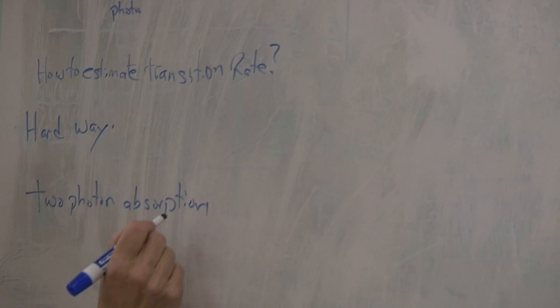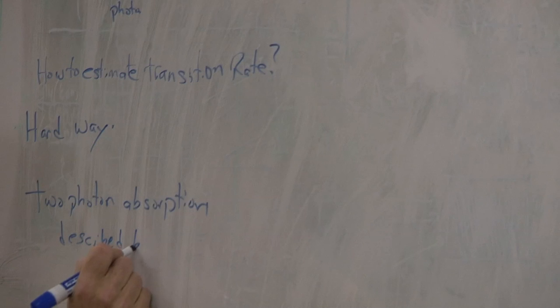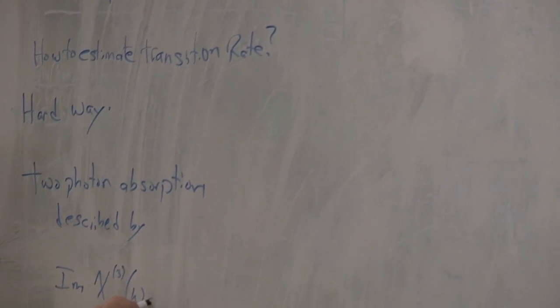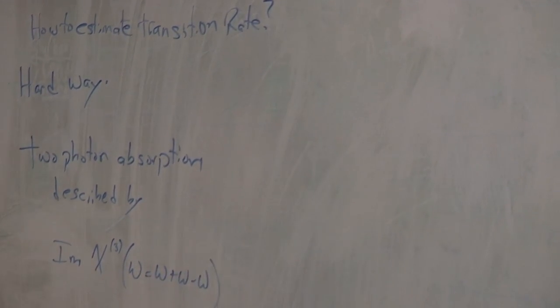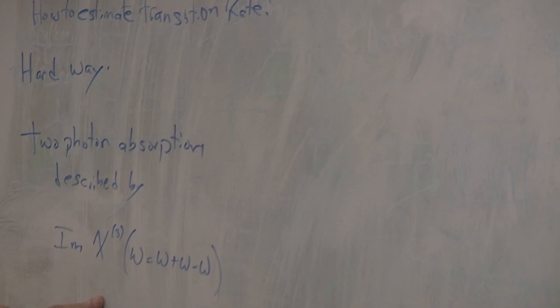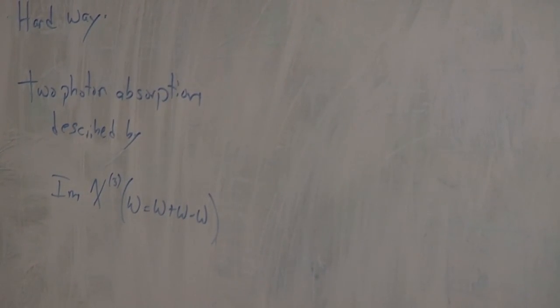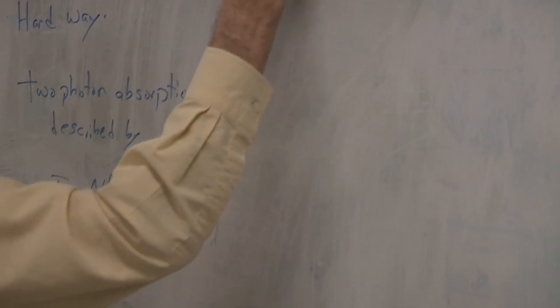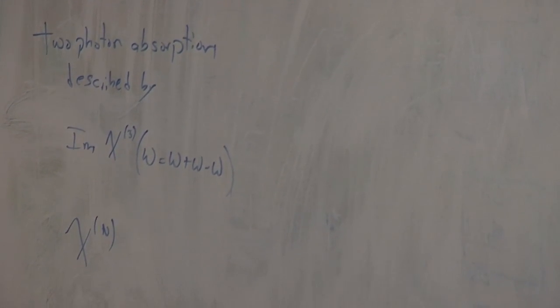Two-photon absorption is described by the imaginary part of χ³(ω = ω + ω − ω). We already know the quantum mechanical expression for this, so all you have to do is take the imaginary part and you're done. But there are like 50 terms in the general expression for χ³. And for n-photon absorption, the last thing you want to do is calculate the most general form of χ^n and take its imaginary part. So there is a much easier way to do it. This is the hard way.